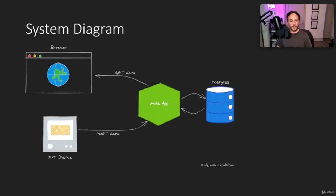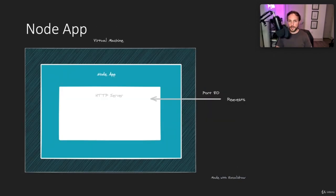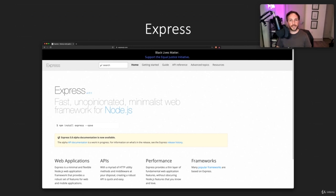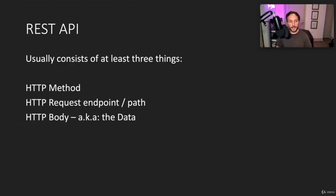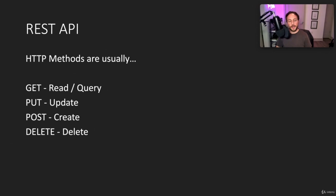Let's discuss API design. We have IoT devices posting temperature data to our server, which will store it in a Postgres database and provide a way to query it. Our Node app is basically a virtual machine running a Node instance, exposing port 80 to our application, since HTTP requests usually come in on port 80. We'll be using Express, a library that gives us handy functions to build this API.